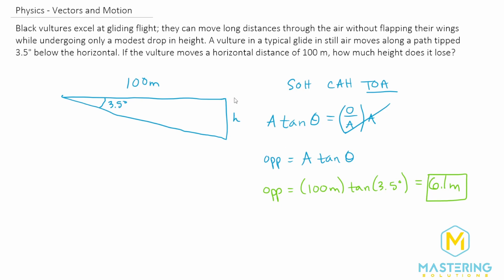So where the vulture stops, it loses 6.1 meters. Since we're stating that the drop in height is happening, we don't need to indicate a negative here. So just 6.1 positive value is okay, because we know that it's losing the height.